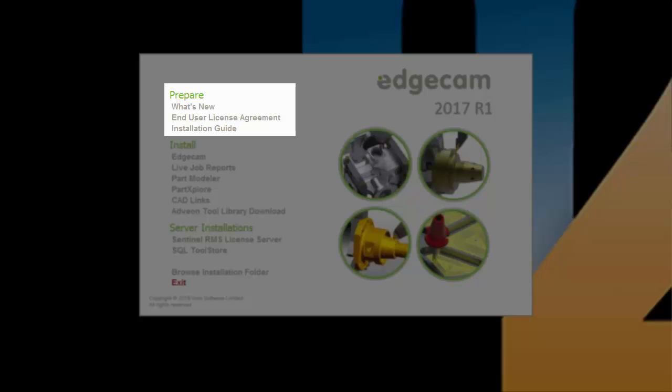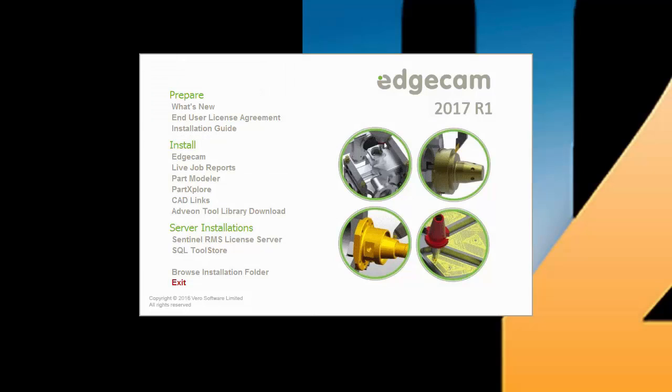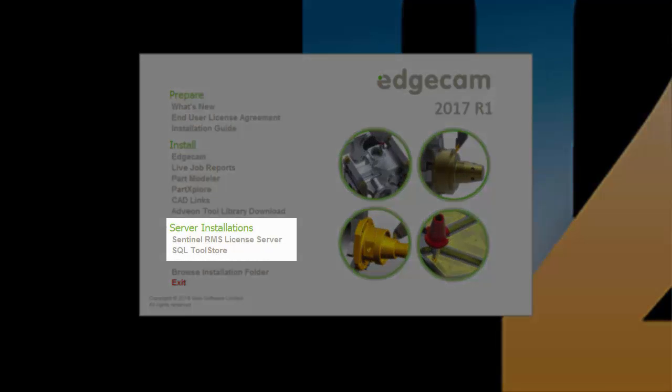The prepare section also provides documentation on what's new. Moving to the server installation section, the Sentinel RMS License Server option is provided for installations where the Edgecam workstations obtain licenses from a network server. This installation is typically done when setting up a new licensed server. If your company is currently using network licensing and already configured and working, you can skip the server installation option.